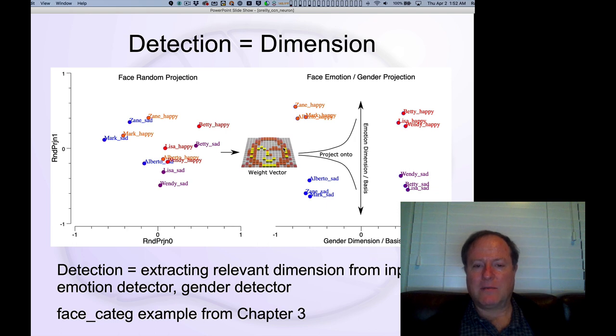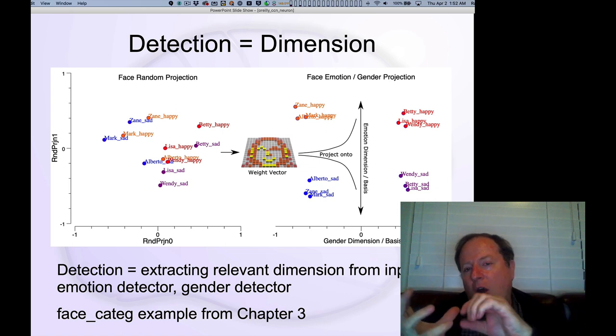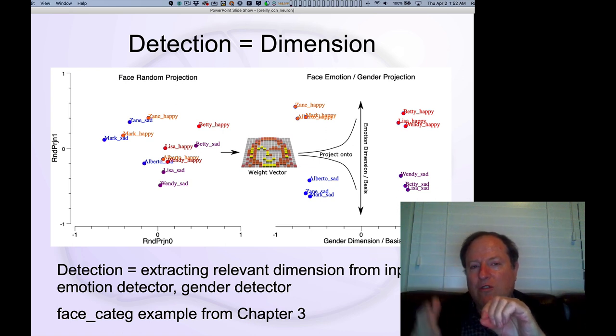And so you'll see in chapter three, when we go through the face categorization model, that this particular weight vector, we'll talk about weights in a second, the synaptic inputs into a neuron, filter this high dimensional space, and essentially project that high dimensional set of inputs onto a new dimension, a new basis for representing that high dimensional space. And so you can think about this as a vector space. This is a particular dimension or basis function that you're projecting that space onto.